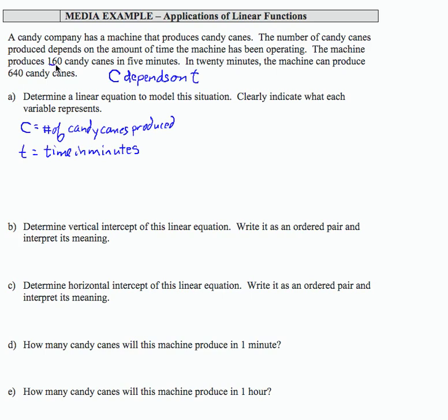The machine produces 160 canes in 5 minutes. So every one of our ordered pairs is going to look like T, C. So this ordered pair would be 5, 160. In 20 minutes, the machine can produce 640. So 20, 640 would be another ordered pair. We're asked to write a linear equation.